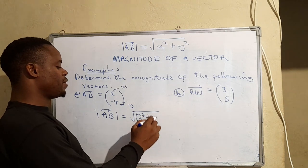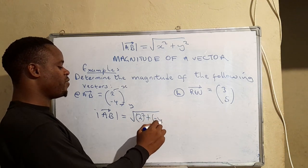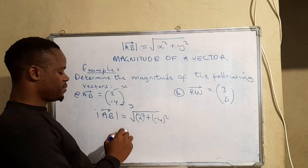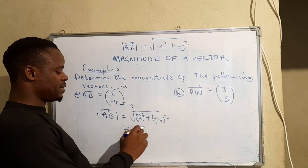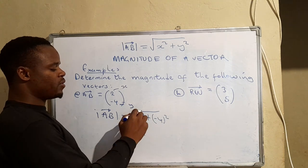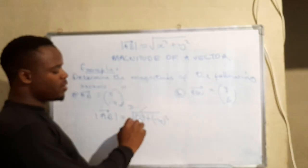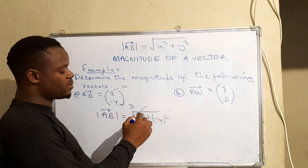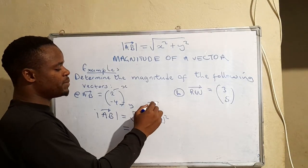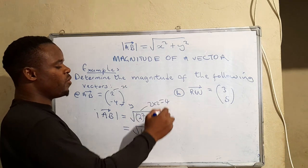So that one will give us a 4 because the exponent counts the number of factors, so that would be 2 times 2 which equals 4. When we expand this one would be -4 times -4 which equals 16, because negative times negative is positive.